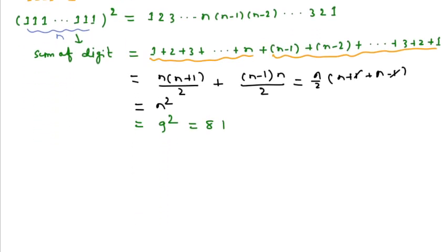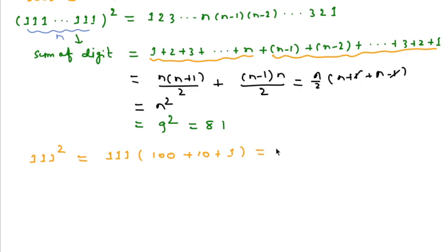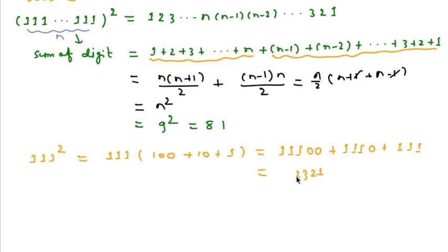In the second method, we can also think of it this way: we can write 111² as (100 + 10 + 1)². After expanding and adding, we get 1+0+0 = 1, then 1+1 = 2, then 1+1 = 2, then 1+1+1 = 3, and so on, giving 12321 for 111².